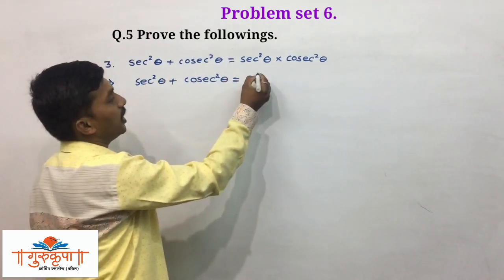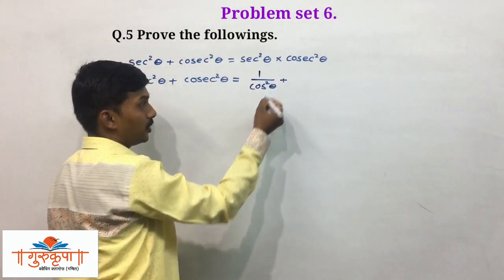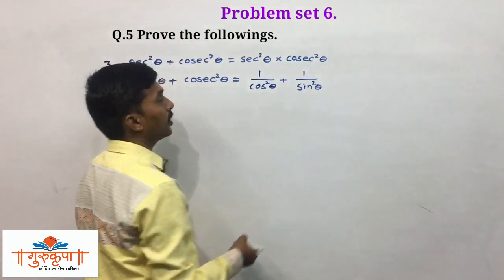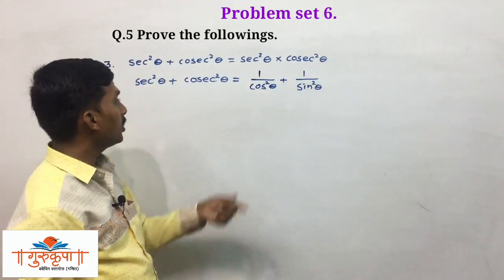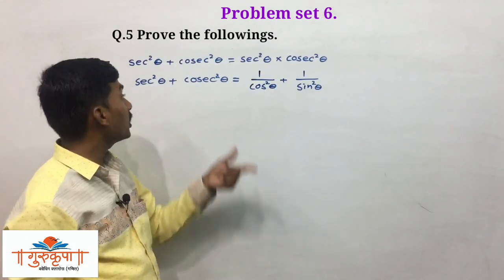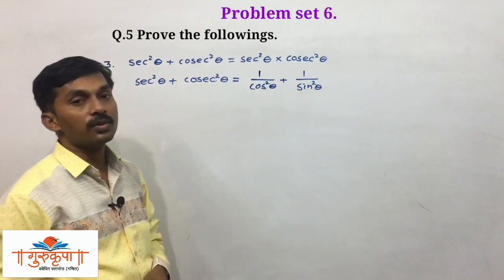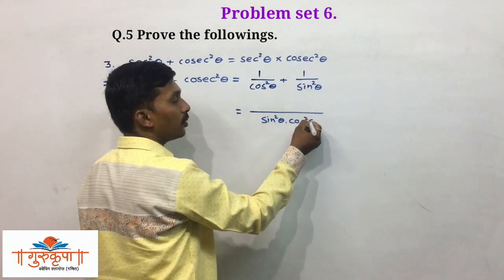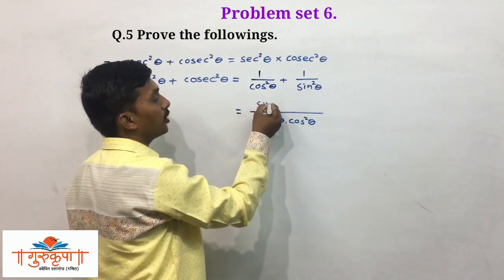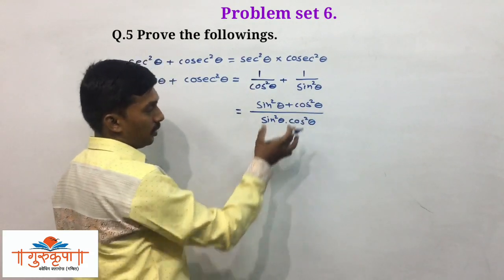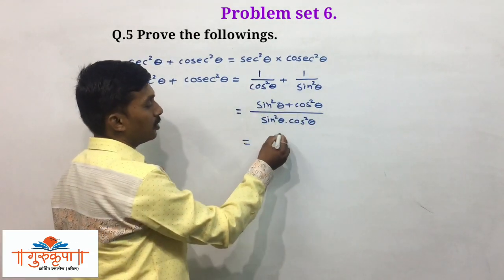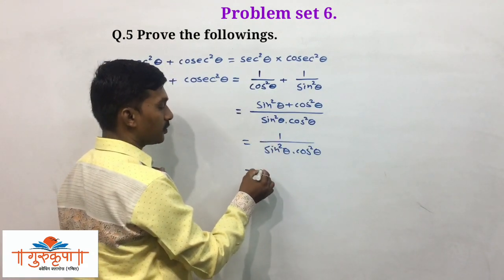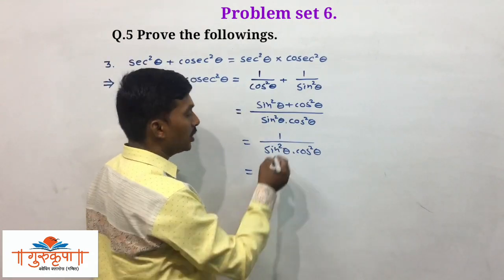We can write sec squared theta as 1 upon cos squared theta, and cosec squared theta as 1 upon sin squared theta — since sec theta equals 1 upon cos theta and cosec theta equals 1 upon sin theta. So LHS becomes 1 upon cos squared theta plus 1 upon sin squared theta. Taking the common denominator, we get sin squared theta plus cos squared theta, all over sin squared theta times cos squared theta.